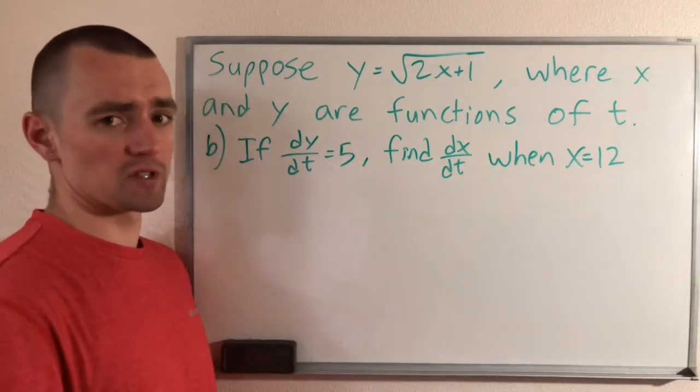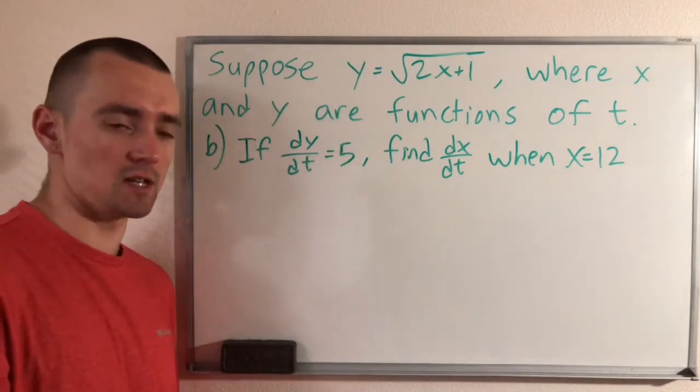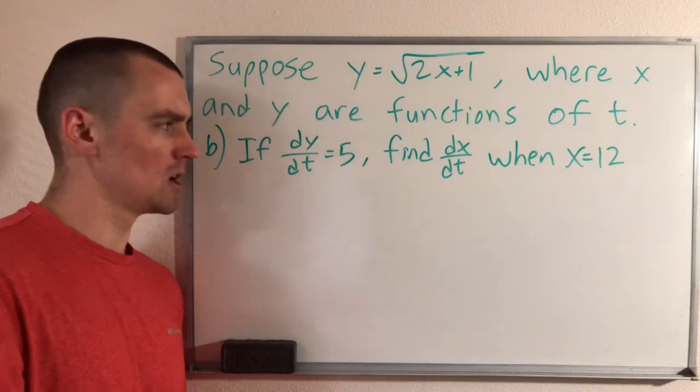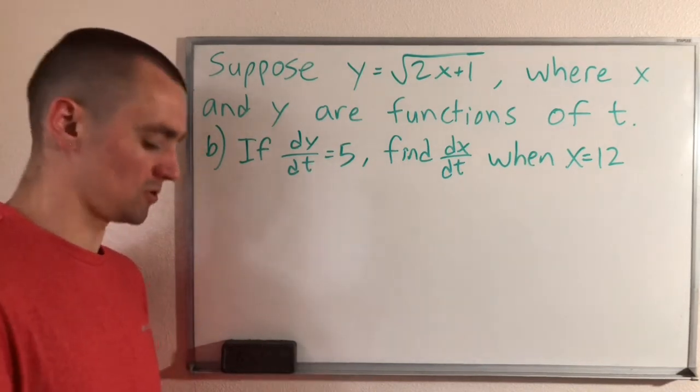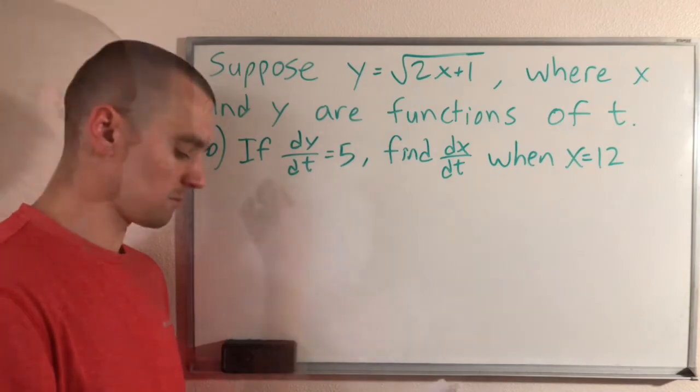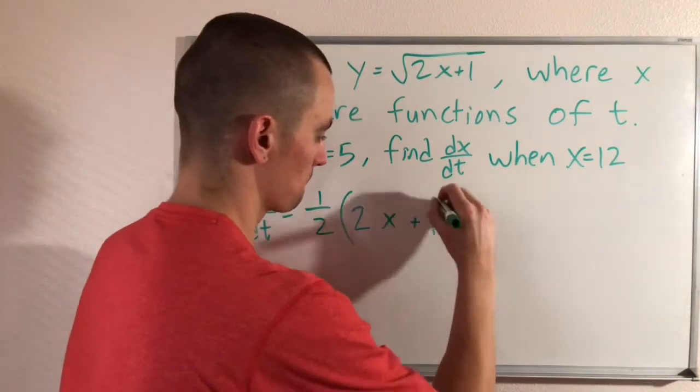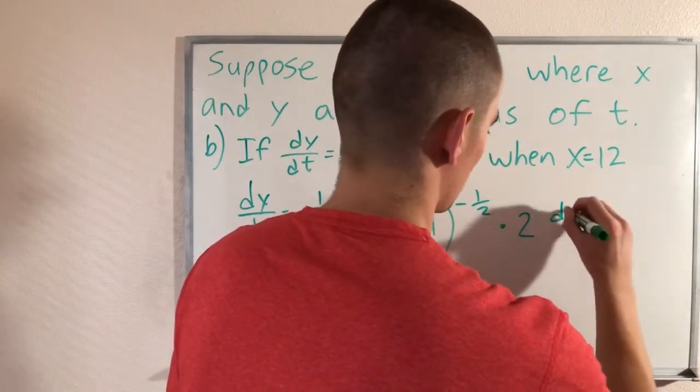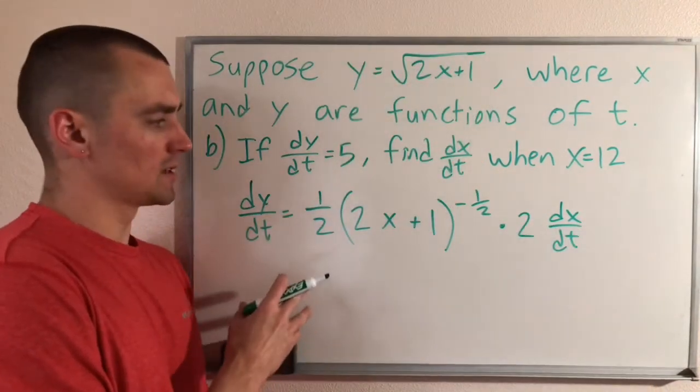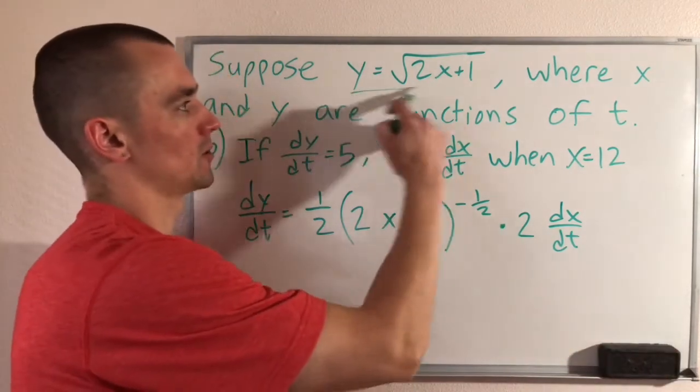So the first step of this is going to be just like the last one. We're just going to take the derivative with respect to t of both sides of this equation. We've already done that, so I'm just going to skip to the result of that step. This is what happens after you take the derivative with respect to t of both sides of our original equation up here.